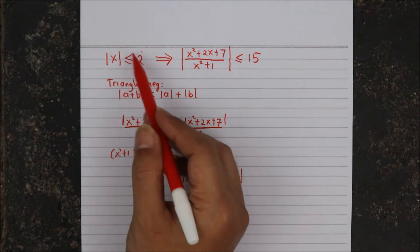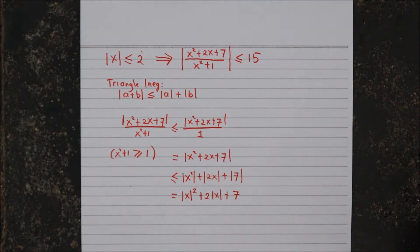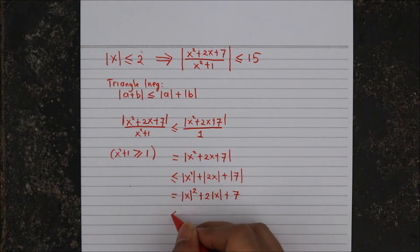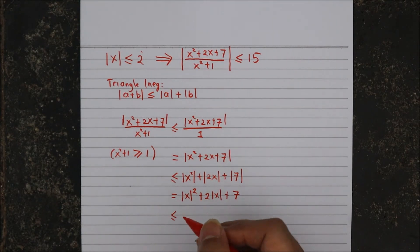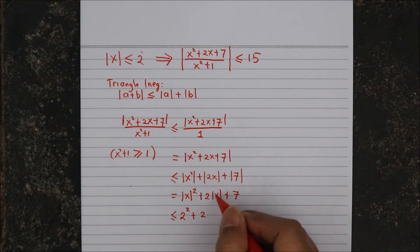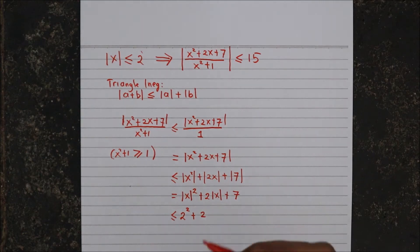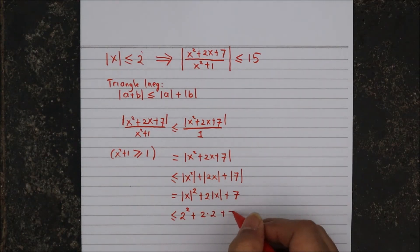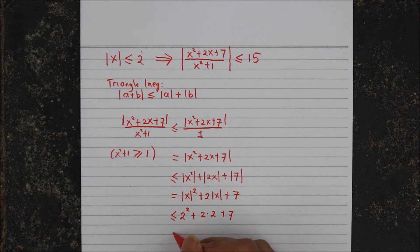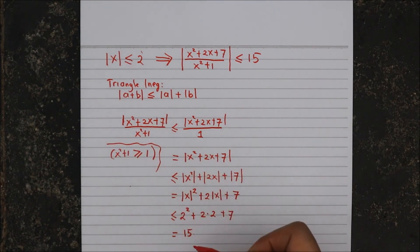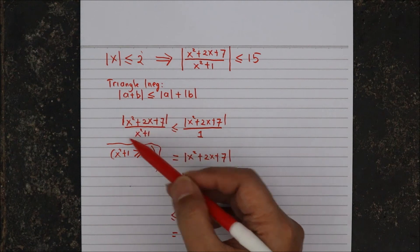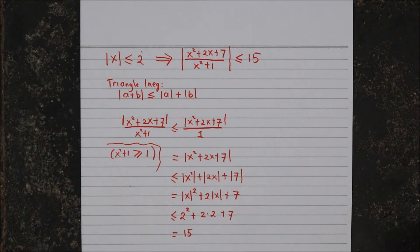Now we use the given information that the absolute value of x is less than or equal to 2. Since each of these is less than or equal to 2, then x squared will be less than or equal to 2 squared, and this absolute value of x is less than or equal to 2, plus 7. If we simplify, we have exactly 15. Reading from top to bottom, this expression is less than or equal to 15.